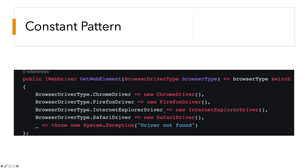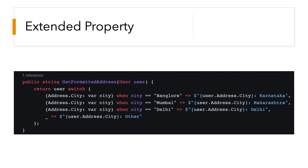Constant patterns are very helpful in automation testing tools like Selenium. For example, if you want to return a browser driver, the browser driver type in the parameter is an enum, and you match based on the enum type to return the appropriate driver. It can also be a string constant — you pass it and return the value you're looking for. That's the constant pattern.